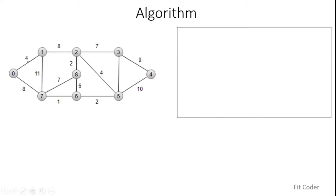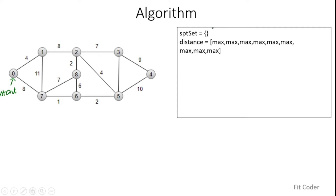So if we are given this graph and the start node is 0, we have to compute the shortest distance from node 0 to all other nodes. The data structures required for this algorithm are: first, the SPT set, which is the Shortest Path Tree — initialized to empty. Then we create a distance array and initialize all elements to max, because we have not yet found the distance for any node. It has 9 elements for the 9 total nodes. The next step is we initialize the start distance to 0, since we are computing distances from the start node.